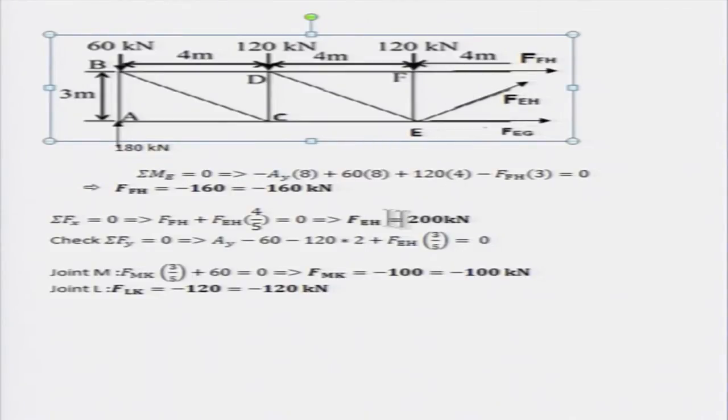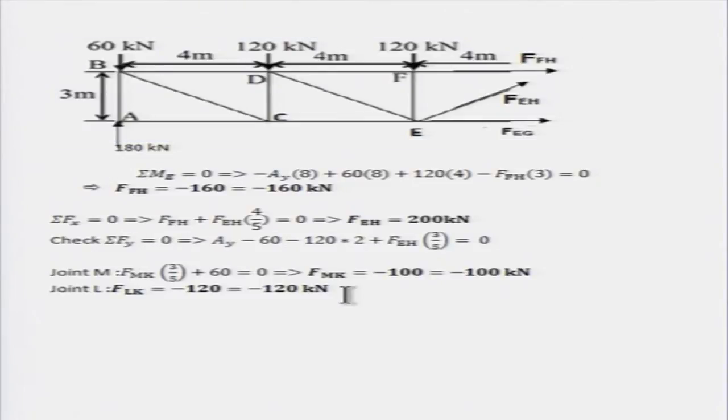Similarly, FH is 200 kilo Newton. And for FLK and FMK you can simply use joint M and joint L. So that will lead to these two problems. MK and LK can be solved based on method of joints.